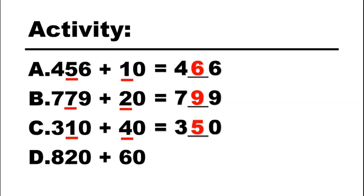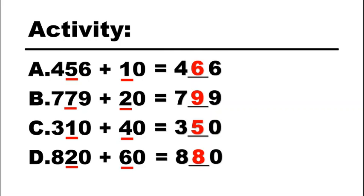For letter D, we have 820 plus 60. Look at your tens digit — it's two and six. Two plus six is eight. Copy your hundreds and ones, so the answer is 880. Always remember, when adding a three-digit number with tens, use this method to find the correct answer as quickly and easily as you can.